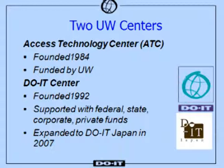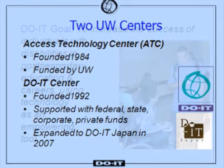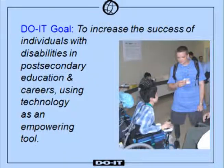Let me tell you about the two UW Centers that I founded and now direct. The Access Technology Center was founded in 1984 and is funded by the University of Washington. The DO-IT Center was founded in 1992 and is supported with federal, state, corporate, and private funds. It expanded to DO-IT Japan in 2007. The DO-IT program has as its goal to increase the success of individuals with disabilities in post-secondary education and careers, using technology as an empowering tool.